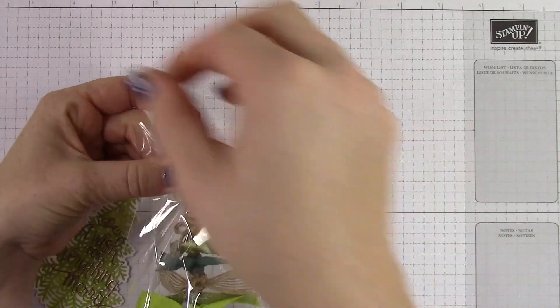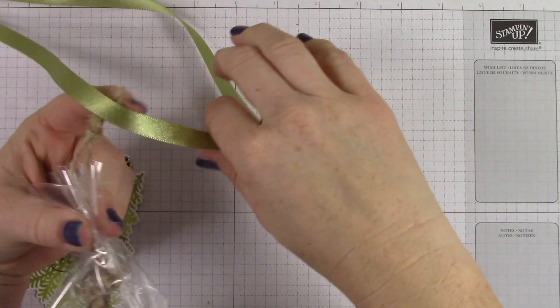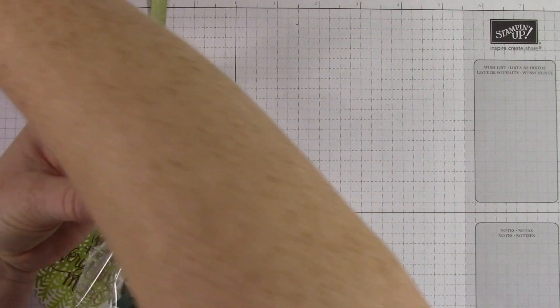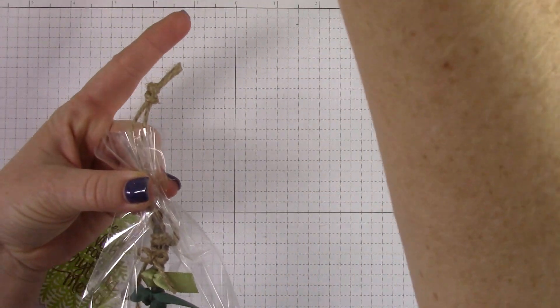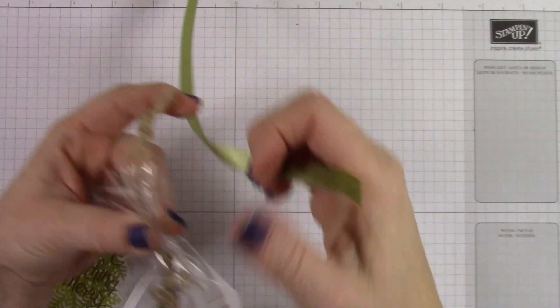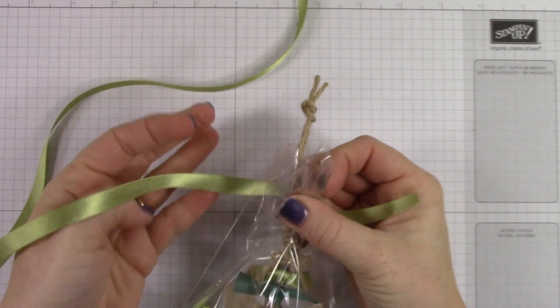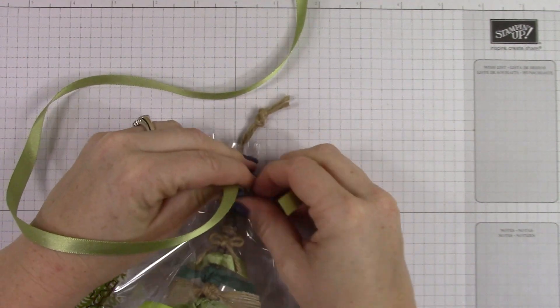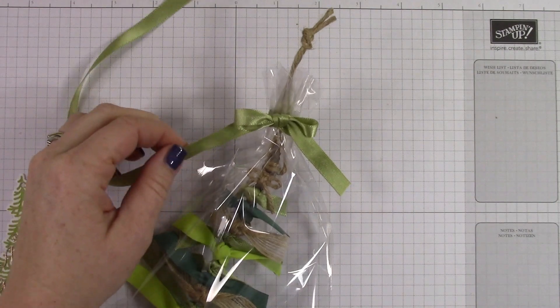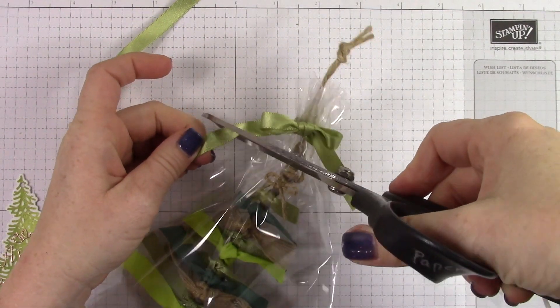Alright, so we're using some of this awesome, beautiful, shiny Pear Pizzazz ribbon. Again, linked below the video if you want to get any of this ribbon. And I'm just going to double knot it and then tie a bow and trim it off. And then I'm going to use a piece of linen thread to adhere my tag.